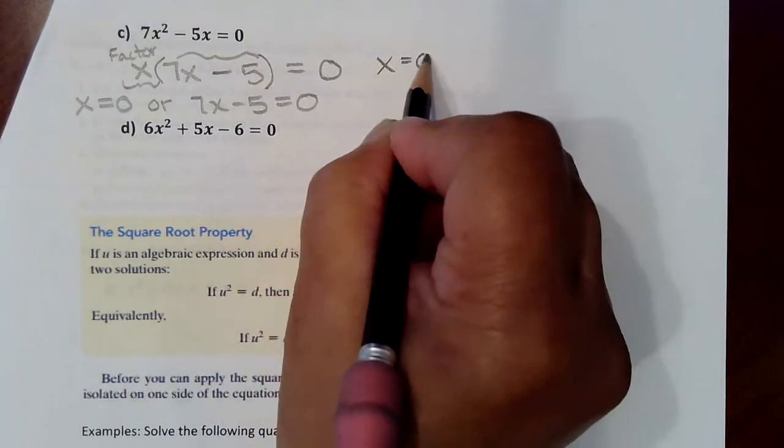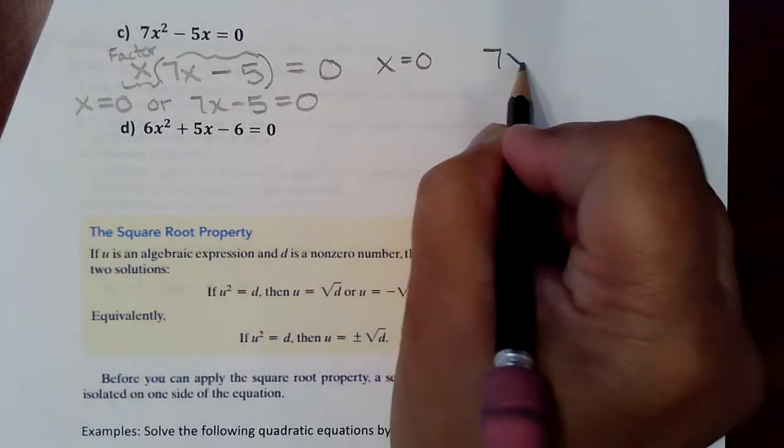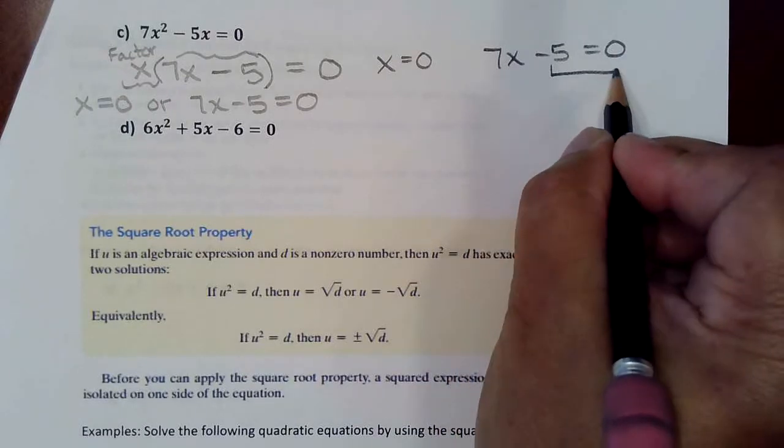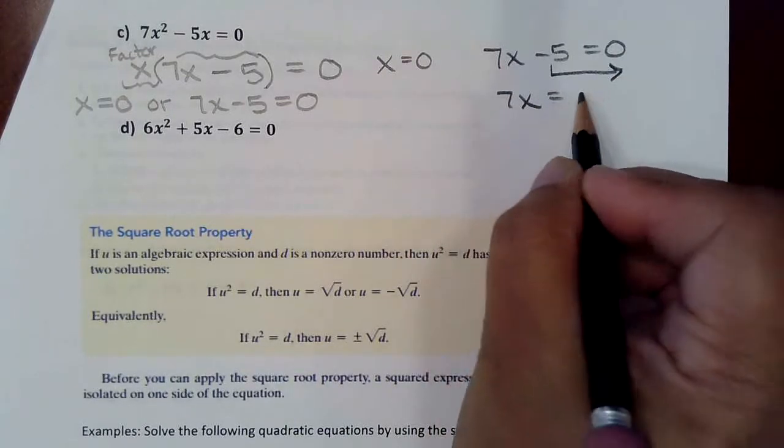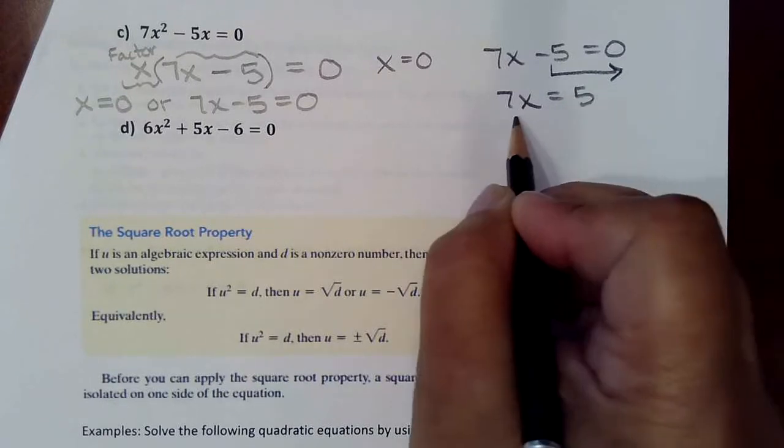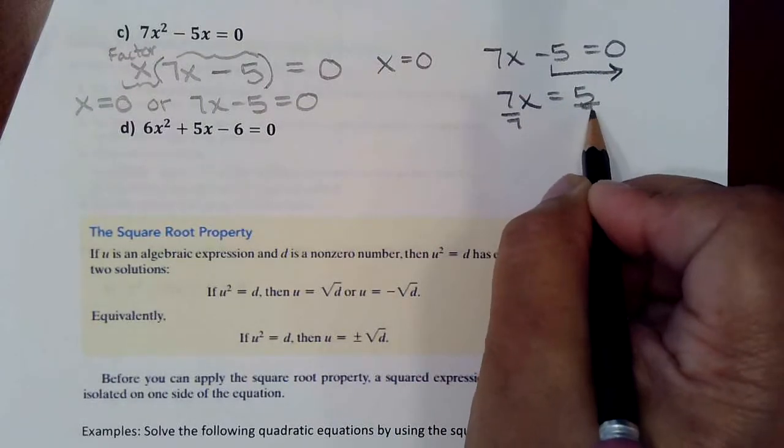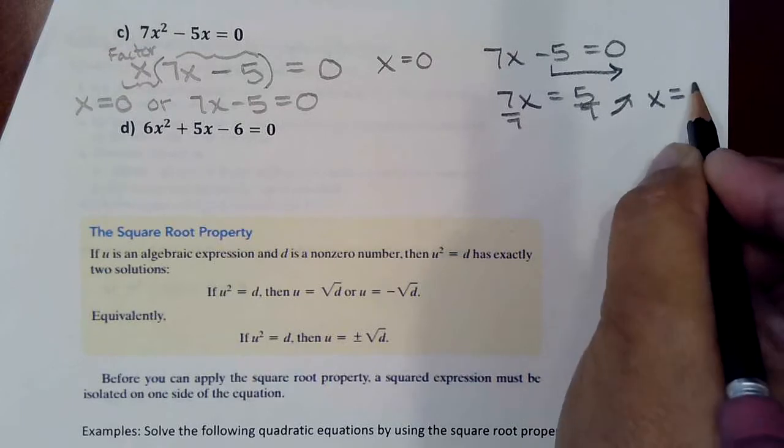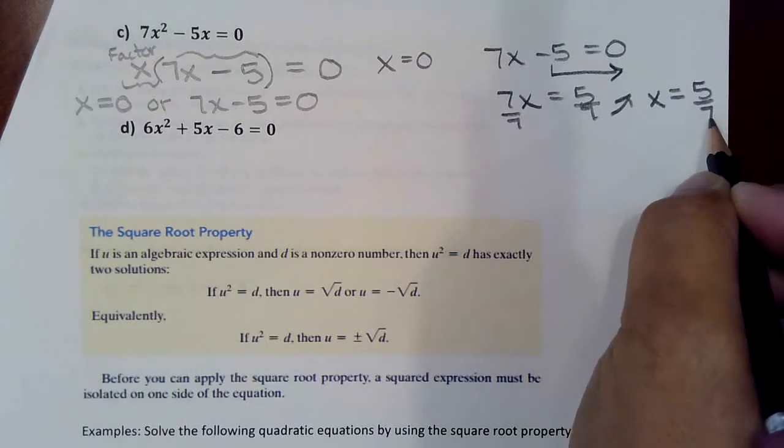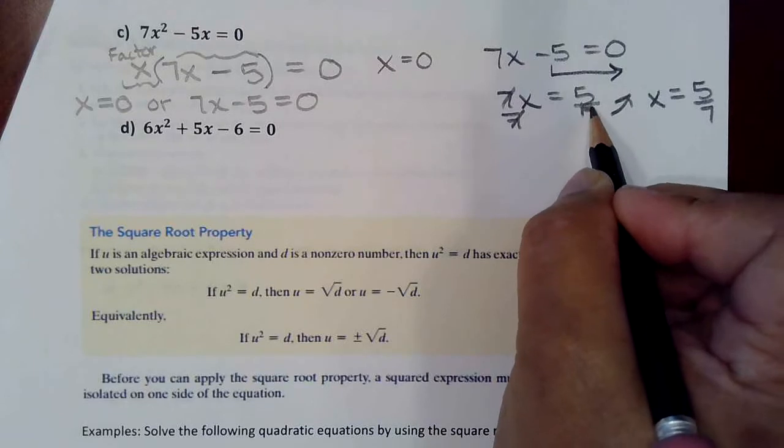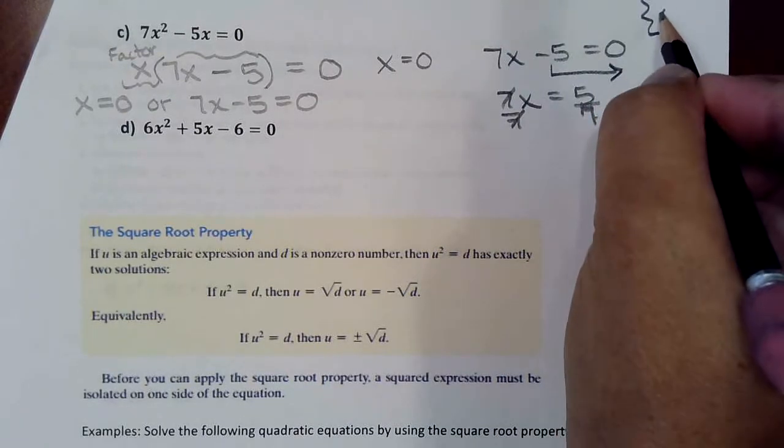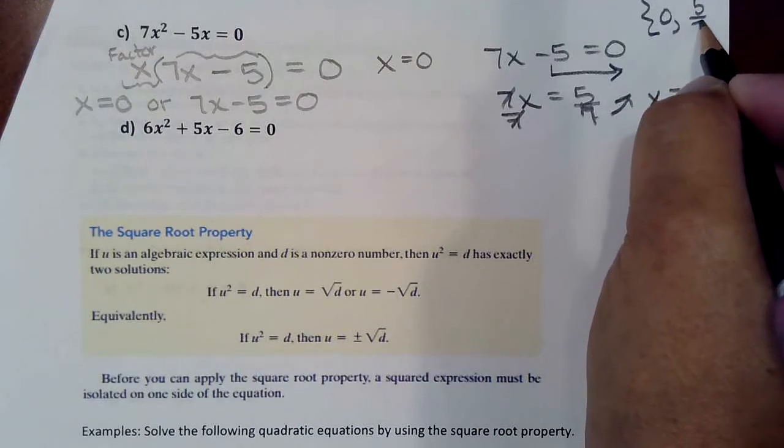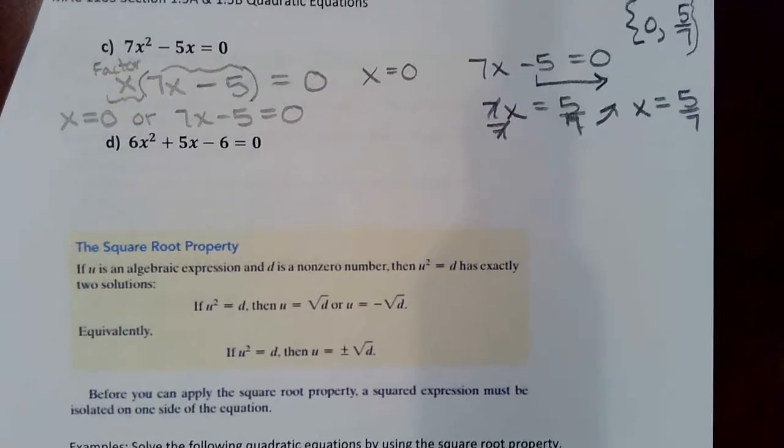So we already have one built-in solution, X equal to zero. But then the 7X minus 5 needs to be worked further in order to get a solution out of it. First by moving negative 5 to the right-hand side. Then by dividing by 7, so that you end up getting X is equal to 5 sevenths. Because that would cancel and you would then have the 5 and the 7 over here. And that would be your solution set. The zero would be an answer. Zero is a legitimate number. Don't throw it out just because you get that for an answer. And you would have 5 sevenths for the other answer.